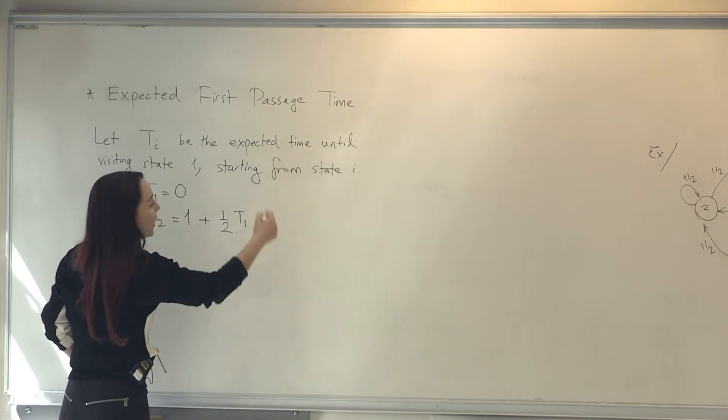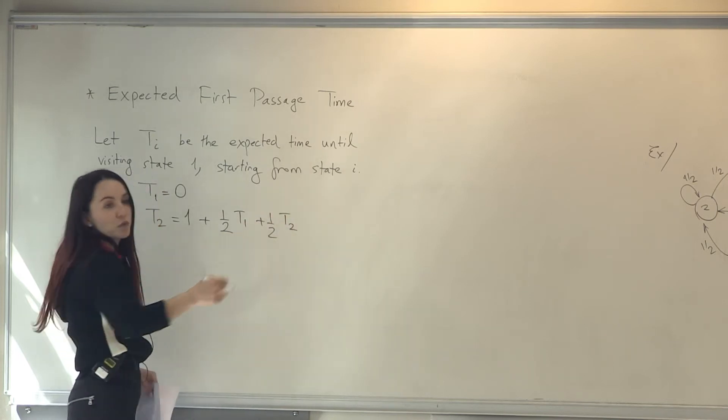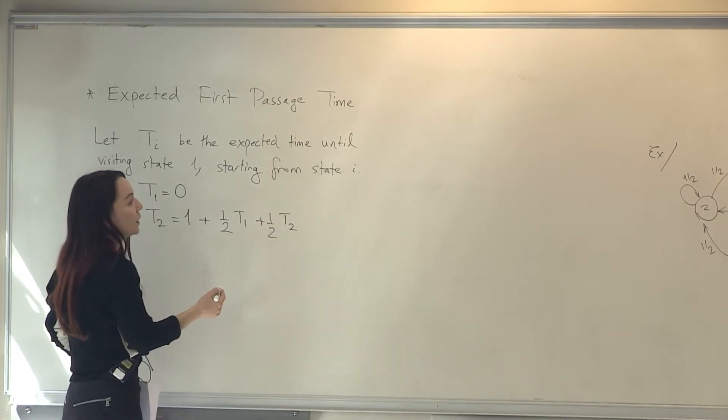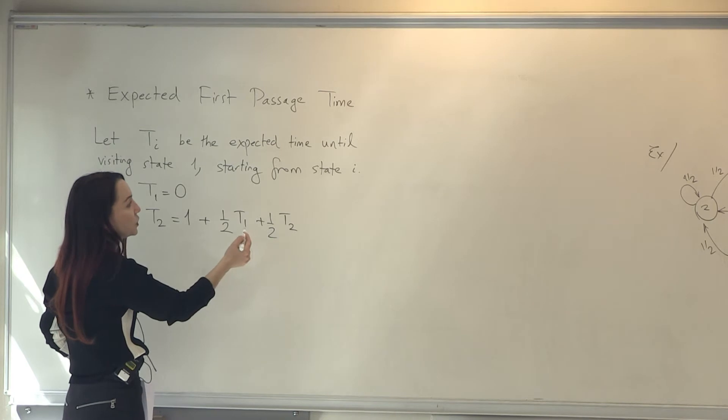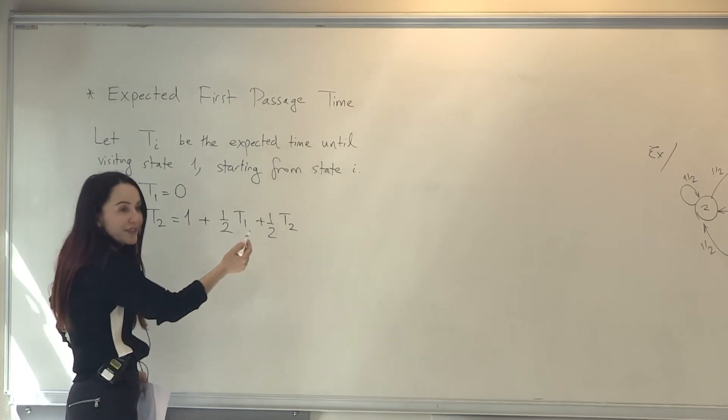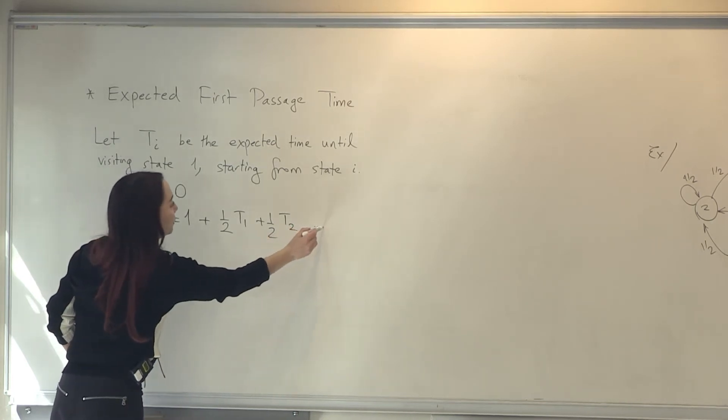Or from 2, we can go back to 2, the further number of transitions until we reach 1 is going to be T2 in expectation, of course. So we can write these equations.